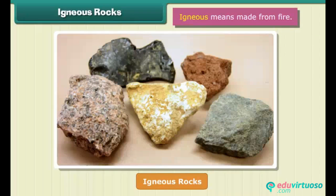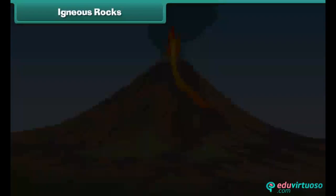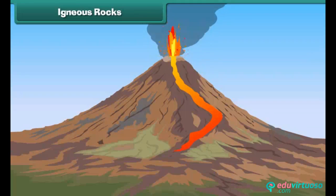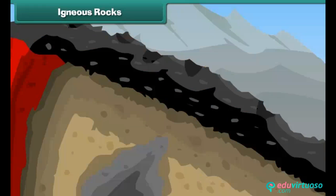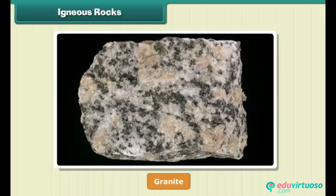Igneous means made from fire. When volcanoes erupt, it causes the liquid rock to rise above the ground. When this liquid rock is present inside the earth, it is called magma. This magma cools and becomes solid. Rocks thus formed are called igneous rocks. They are also called primary rocks. Granite is an example of igneous rock.